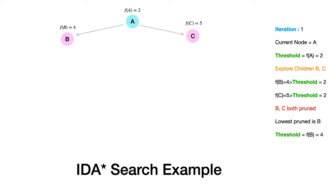When F(n) values exceed the threshold, those nodes are pruned — their children are not pursued further. Among these pruned nodes, we take the one with the lowest F(n) and use it as the threshold for the next iteration. Here F(B) = 4 and F(C) = 5, so B has the lower cost, making the next threshold 4.